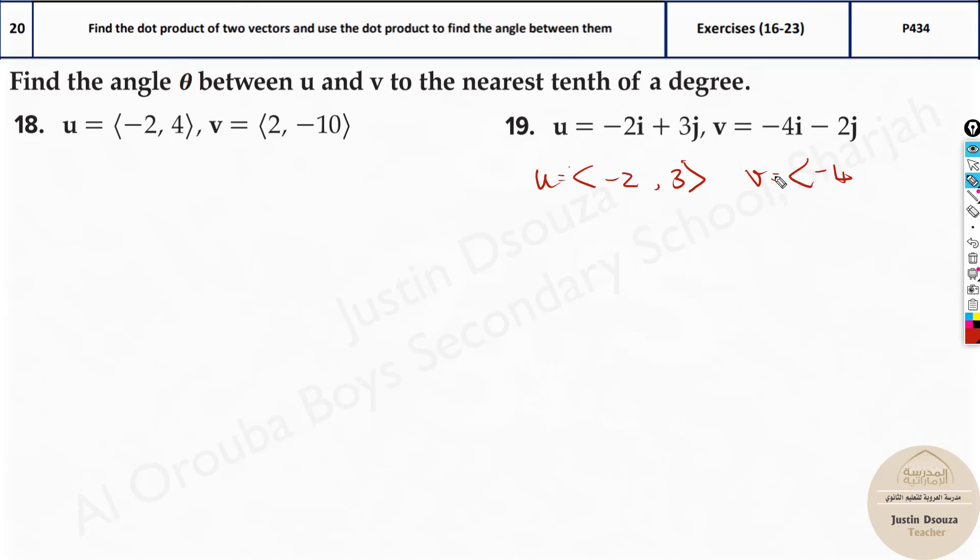We use this diamond brackets. Minus 4 and minus 2. That's it. Now we solve it up. We know the formula is cos theta equals u dot v divided by magnitude of u multiplied with magnitude of v.